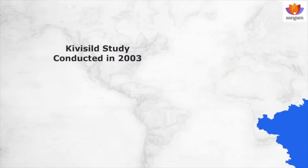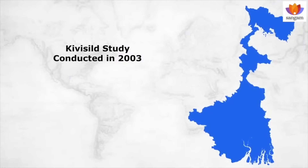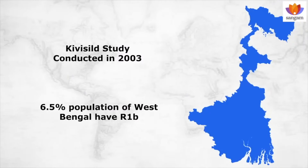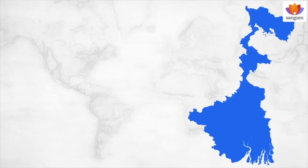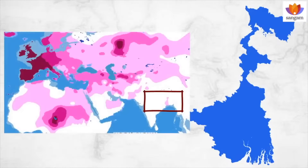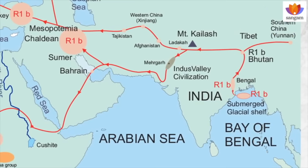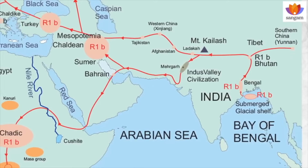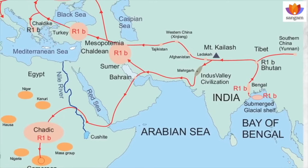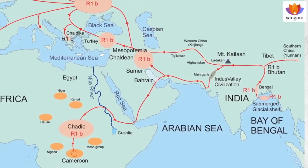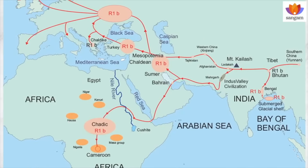The Kivisil study conducted in 2003 shows that 6.5% of the population of West Bengal have R1-Bravo, which is quite significant. These isolated pockets need to be included while charting the early migration paths of the fraternity. In fact, it is even possible that this pocket is the oldest settlement of the R1-Bravo genetic identity from where the earliest migration of R1-Bravo started. Once we arrange the migration path of R1-Bravo originating from the Bengal coast, all other pockets of R1-Bravo including the isolated pocket of Bahrain could be connected along two continuous migration paths.